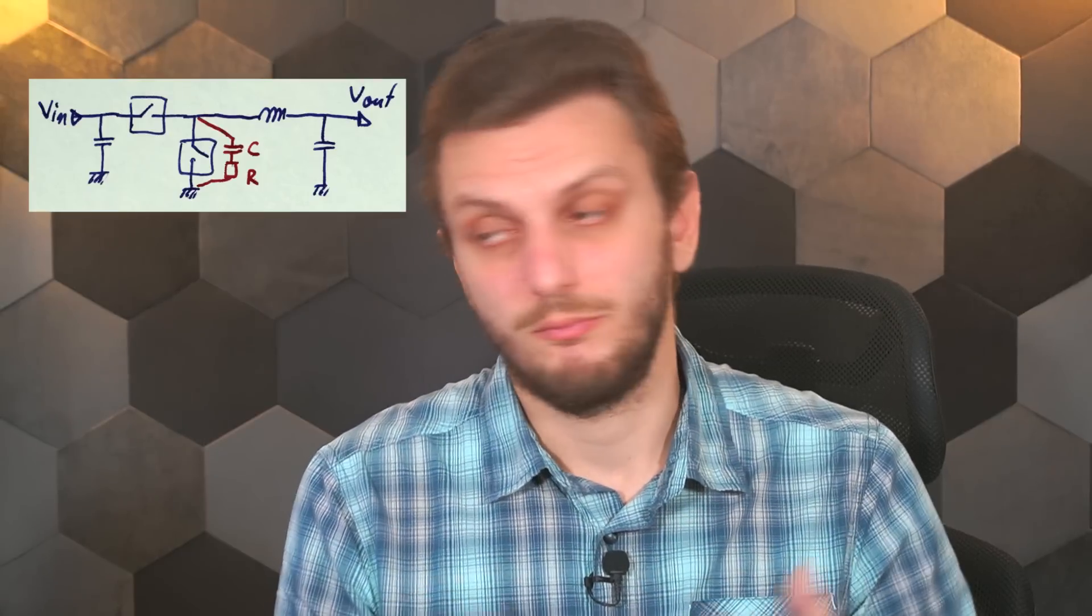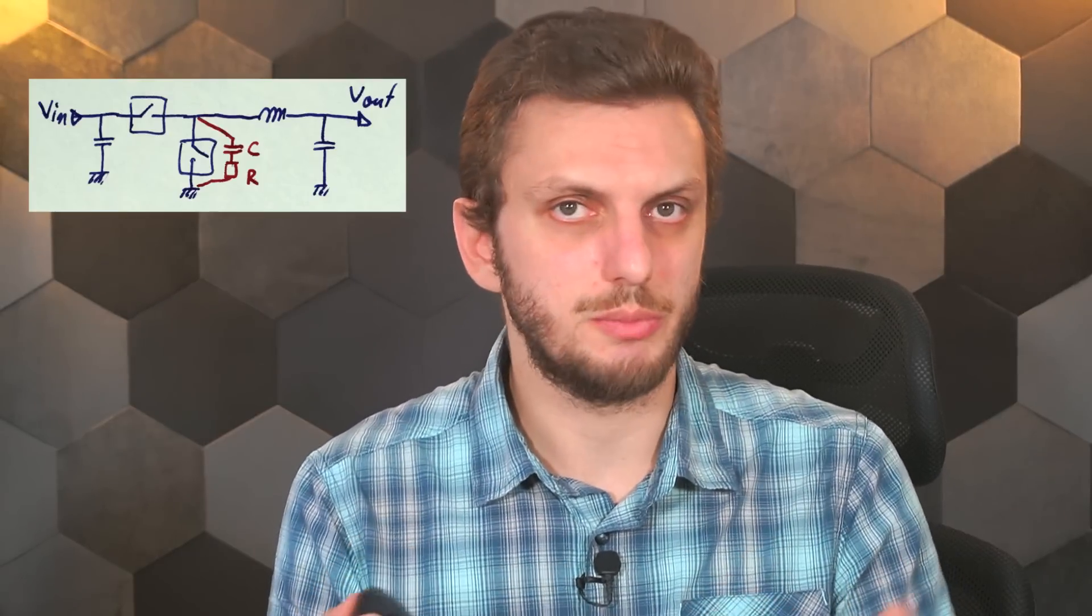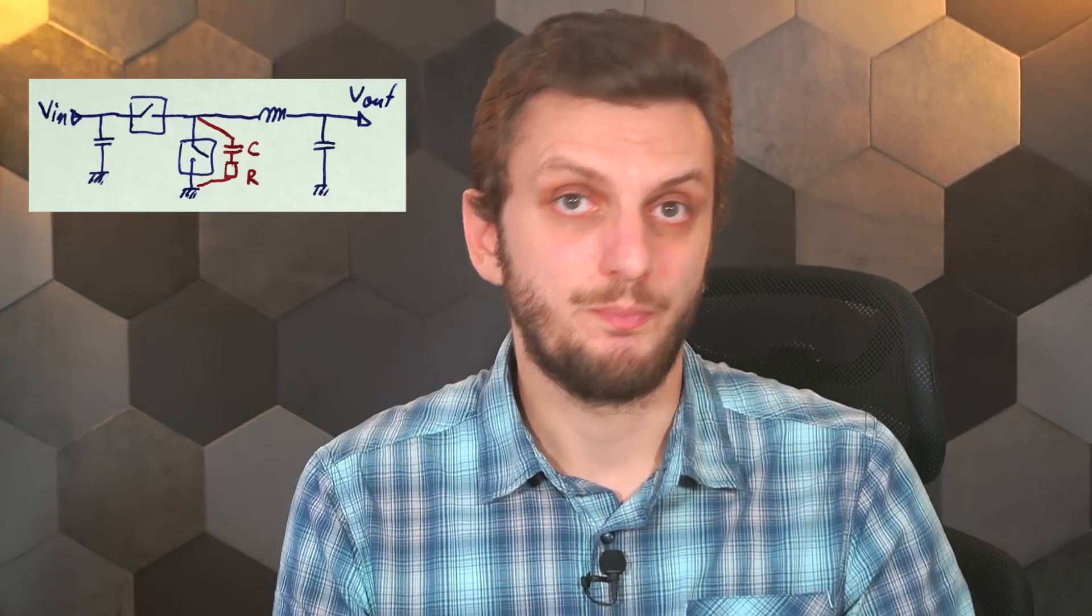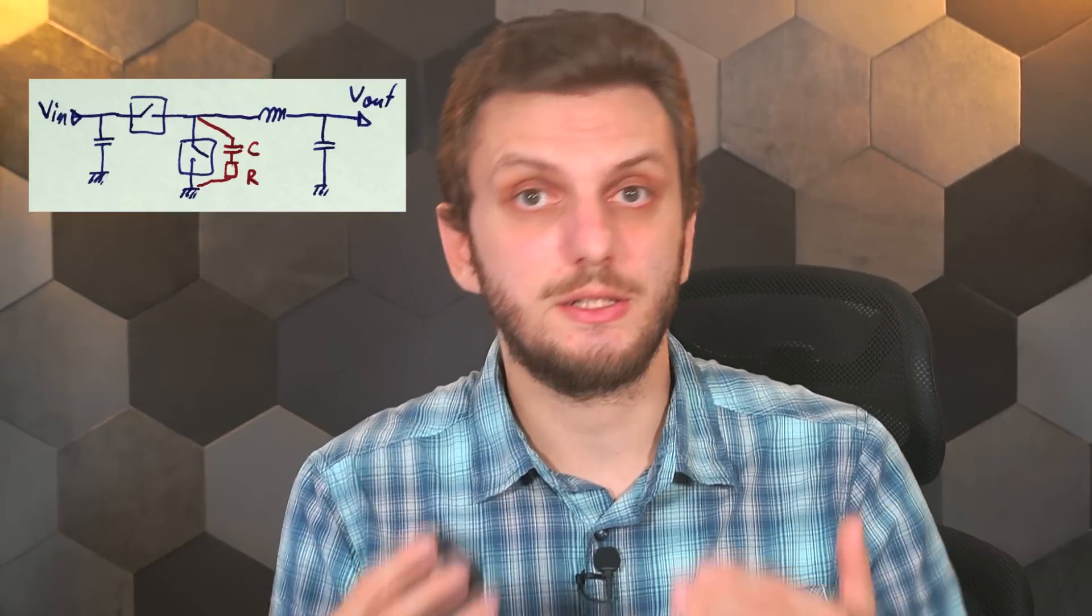Once all component choice and layout related measures have been depleted, the last common measure is the addition of a snubber circuit. Depending on the use case, multiple implementations are used, but I will focus on the most basic type, the RC resistor capacitor snubber.